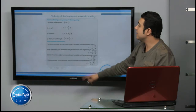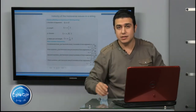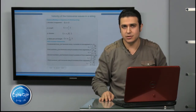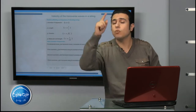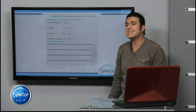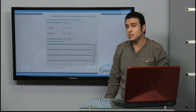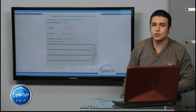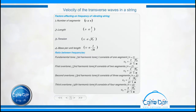The second factor is the length of the string. The relation between the length of the string and the frequency is inversely proportional, so nu is inversely proportional to 1 over L. The third factor is the tension force, and the relation between the square root of tension force and the frequency is directly proportional, so nu is directly proportional to the square root of Ft.